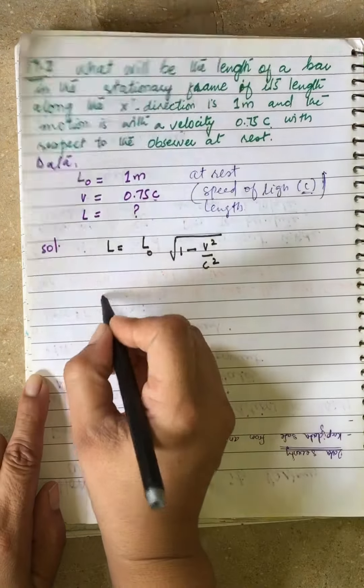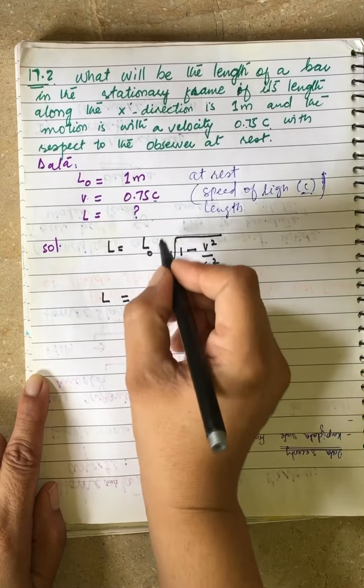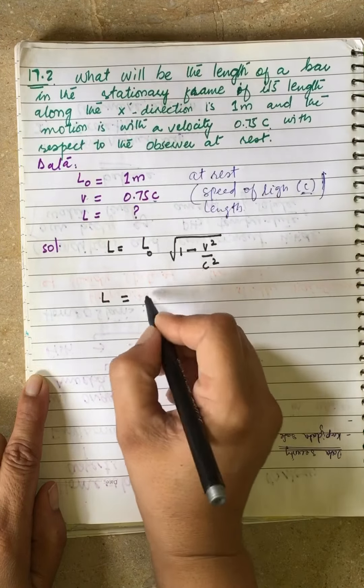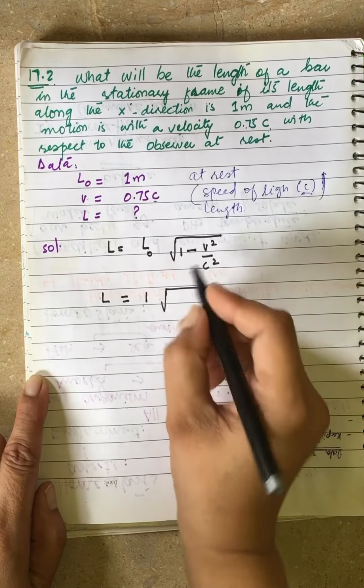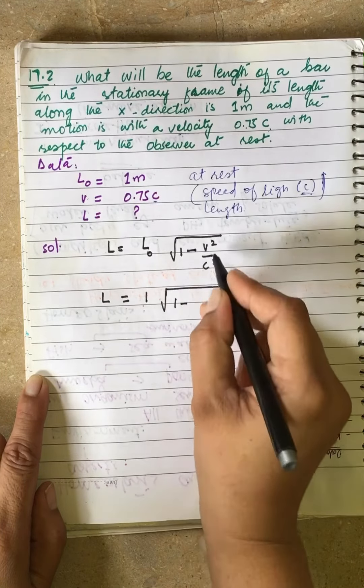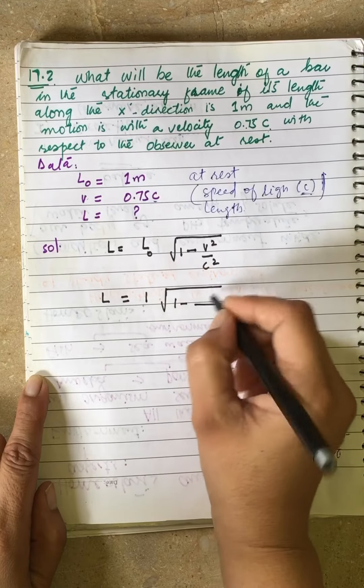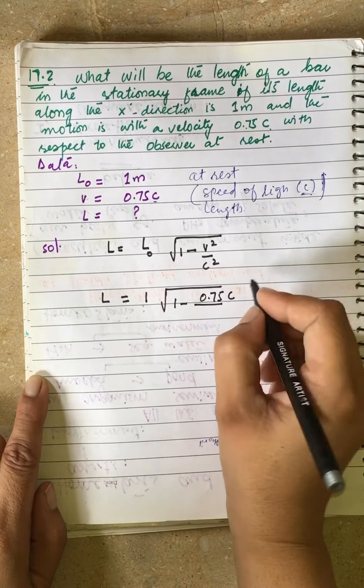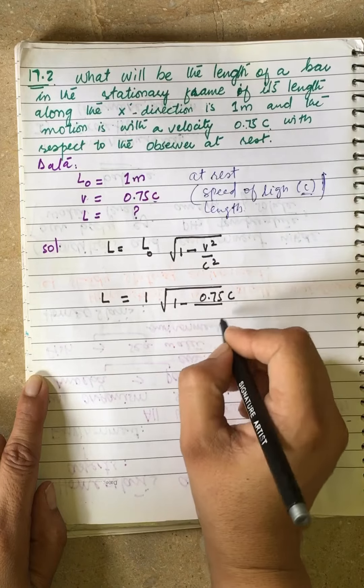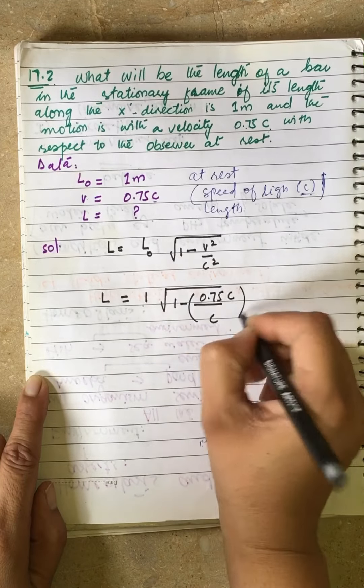Now we calculate. L equals L₀, which is 1 meter, under root 1 minus v squared. V value is 0.75c divided by c squared. C cancels out.